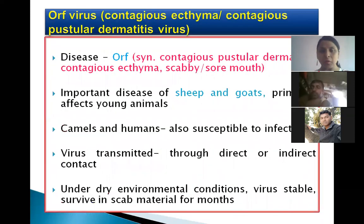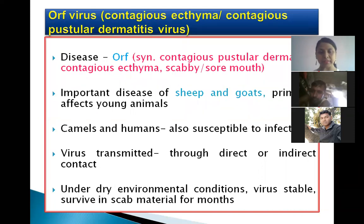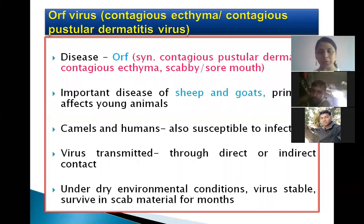The ORF virus is also named Contagious ecthyma or Contagious pustular dermatitis virus. The disease ORF has synonyms including Contagious pustular dermatitis, Contagious ecthyma, sore mouth, or scabby mouth. It is an important disease of sheep and goats, mainly affecting young animals of these species.